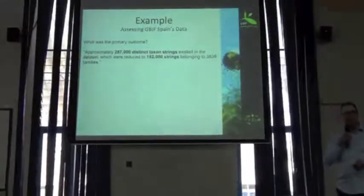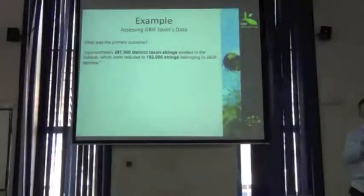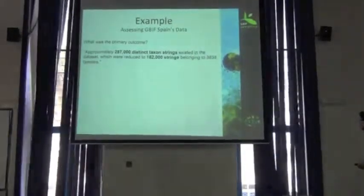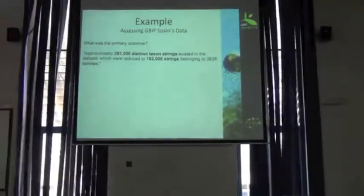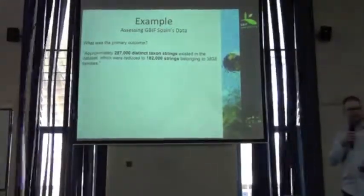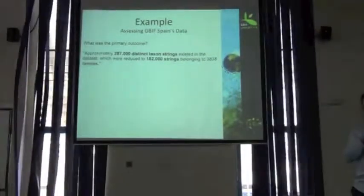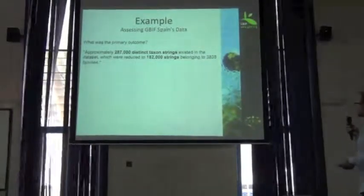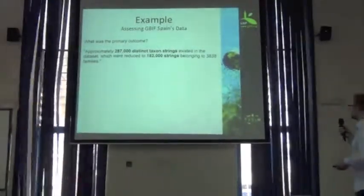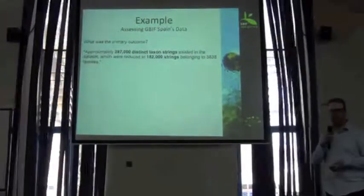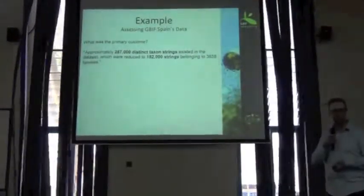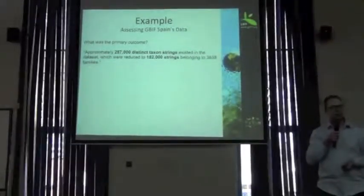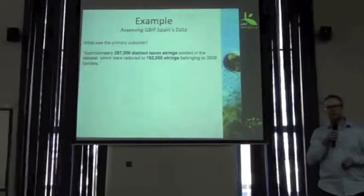So, what was the outcome of Javier's taxonomic assessment? Approximately 287,000 distinct taxonomic strings existed in the data set to begin with. After all those different steps and assessments, that was reduced down to 182,000 new strings. So, pretty successful — and hopefully all of you can pick up the skills this afternoon to be able to make the same assessments and clean your data in a similar way.